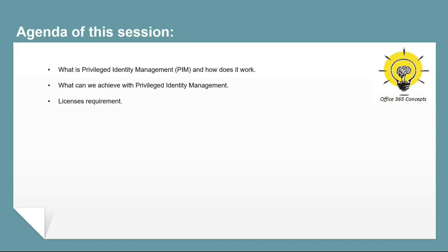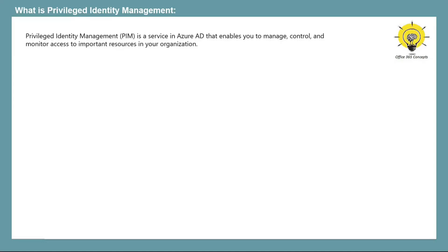We will discuss what is Privileged Identity Management, what we can achieve with this feature, and what are the license requirements for using Privileged Identity Management. By definition, Privileged Identity Management or PIM is a service in Azure Active Directory that enables you to manage, control, and monitor access to the important resources in your organization. These resources include resources in Azure Active Directory, Azure, and other Microsoft online services — for example, Microsoft 365 or Microsoft Intune.